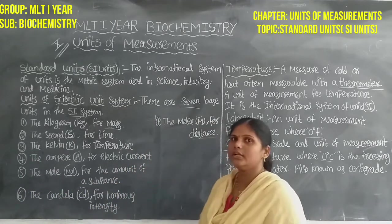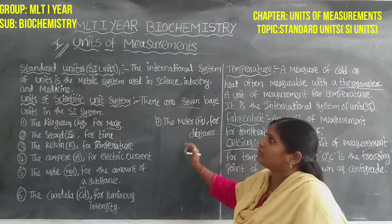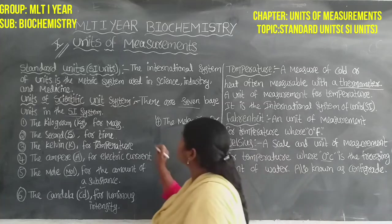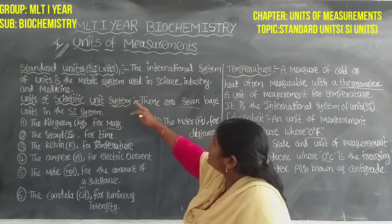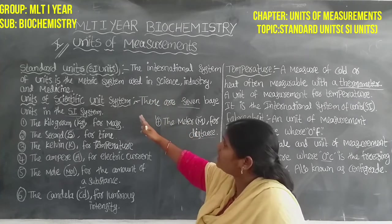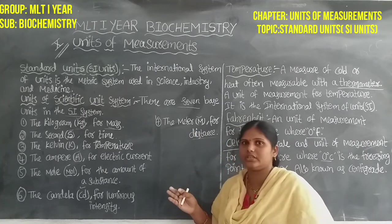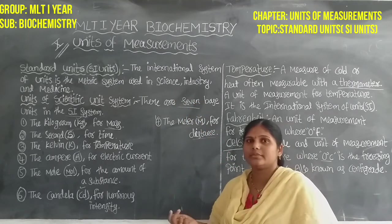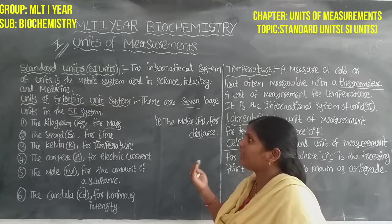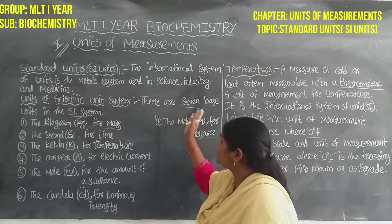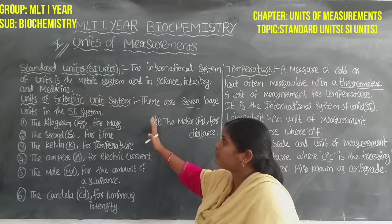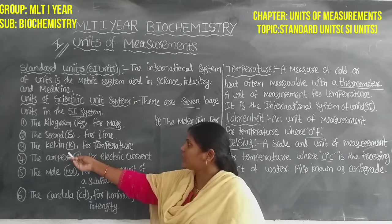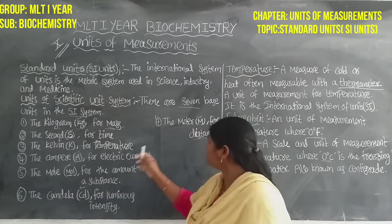This is the short question, two marks question. Standard units — SI units. The international system of units is the metric system used in science, industry and medicine. In the SI units there are basically 7 base units: kilograms, seconds, kelvin, ampere, moles, candela, and meter.